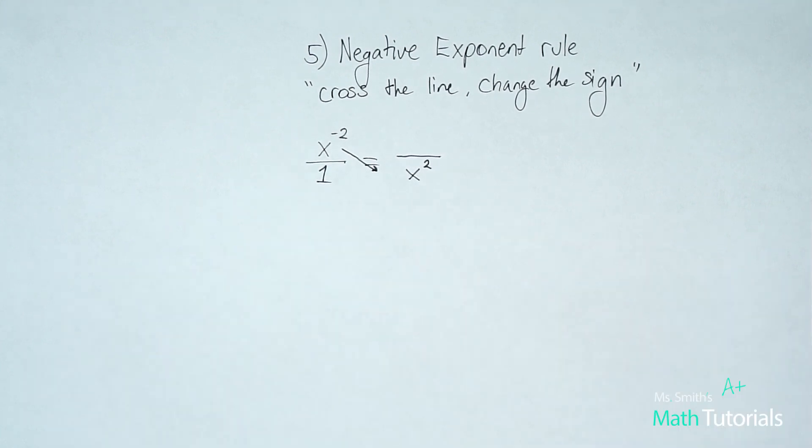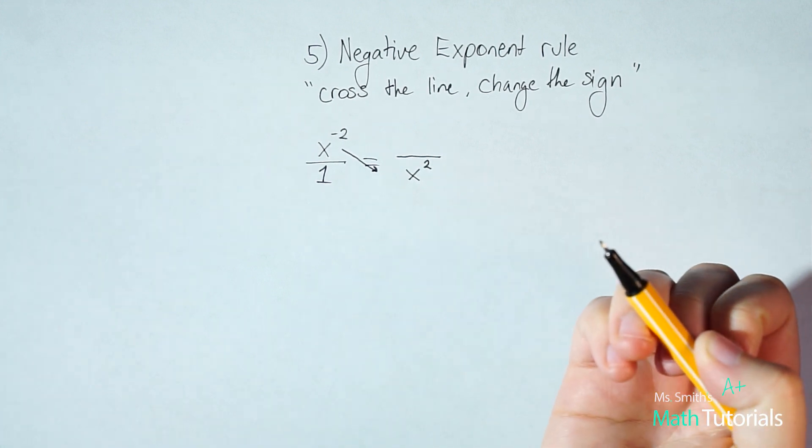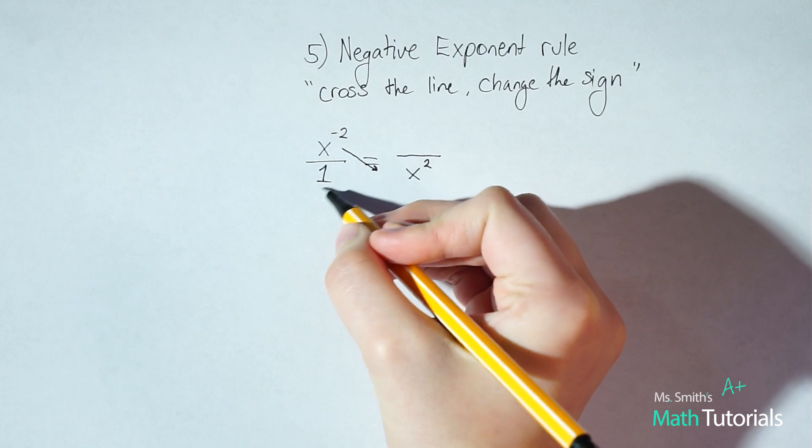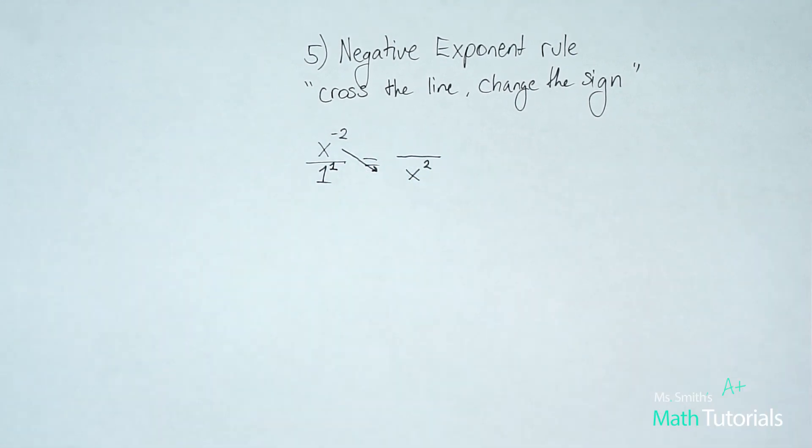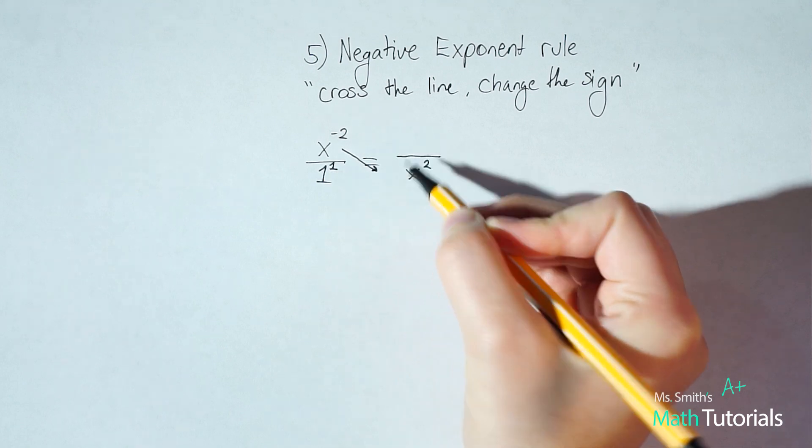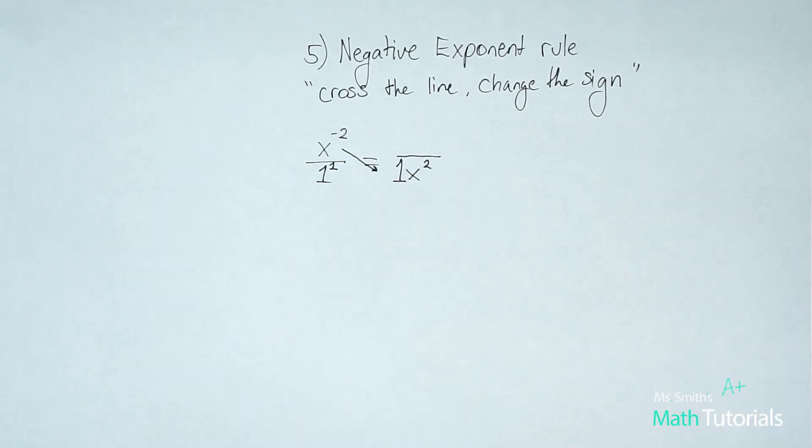So I know the next thought is, oh, well this one should move up here. Not technically, because as we remember back in my first video, anytime we have a whole number where it doesn't have an exponent, it's an understood exponent of positive one. So this one does not have a negative exponent. Therefore, we do not cross the line, change the sign. It actually stays at the bottom right where it is.